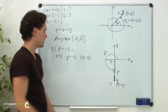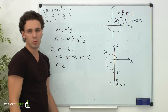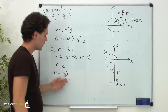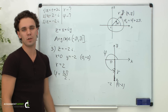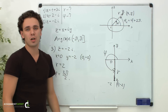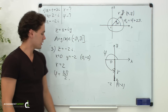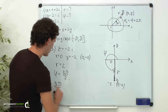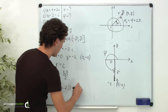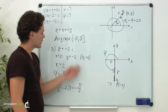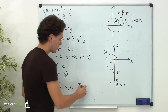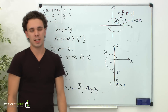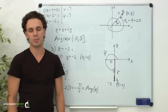Obviously, the modulus r in this case equals 2. Also, we can see from the graph that phi equals 3 pi over 2. This value is not inside the principal argument interval, so we subtract 2 pi: 3 pi over 2 minus 2 pi equals negative pi over 2. This value is inside the interval, so negative pi over 2 is the principal argument of z. Our task is complete, and that's the way we graphically represent complex numbers.